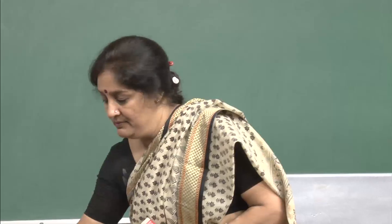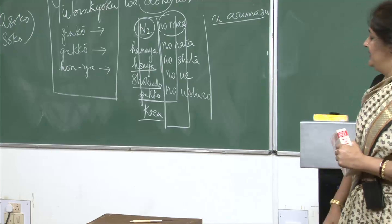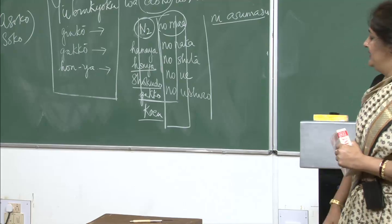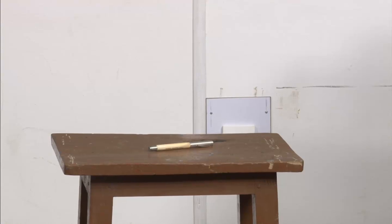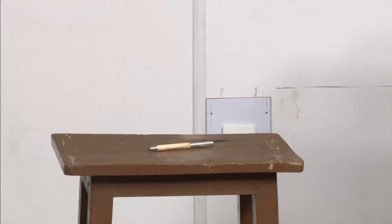Let me see if you got it right. Pen wa tsukue no ue ni arimasu — here is a pen. Pen wa doko desu ka? Pen wa tsukue no ue ni arimasu. What about this? Hako wa doko desu ka? Hako wa tsukue no ue ni arimasu.